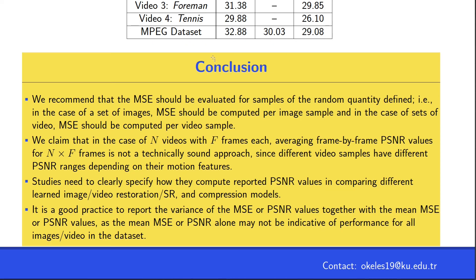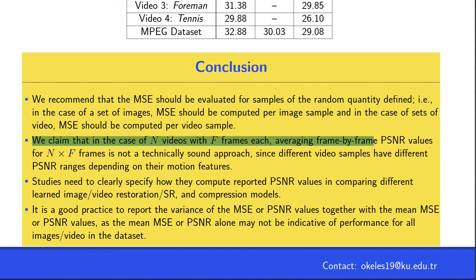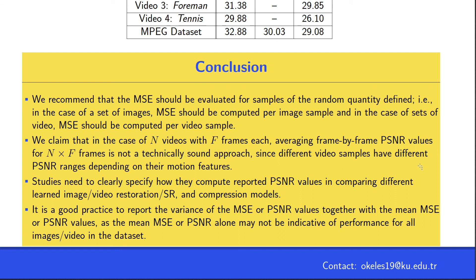In conclusion, we recommend that the MSE should be evaluated for samples of the random quantity in the tasks. If it is an image-related task, the MSE should be calculated for each image; and for a video-related study, the MSE should be reported per video sample. This is also the reason we claim that in the case of N videos with F frames each, averaging frame-by-frame PSNR values is not a technically correct approach. Moreover, this approach does not consider the motion features that each separate video has, which also determines the PSNR range for each video.